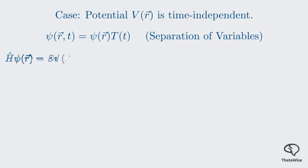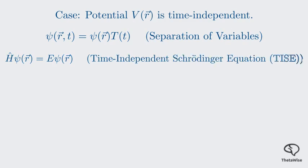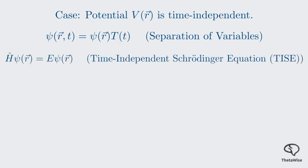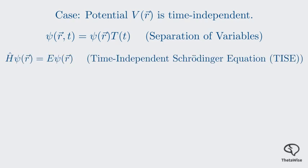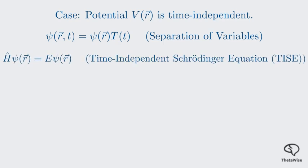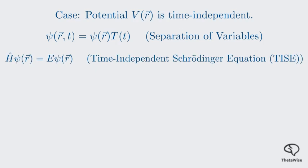Plugging this separated form into the time-dependent equation and doing a bit of algebra leads us to the time-independent Schrödinger equation, or TISE. This equation is much easier to work with. Notice what it says. Applying the Hamiltonian operator to the position-dependent wave function ψ gives us the same wave function ψ back again, just multiplied by a constant E. This constant E is the energy of the system.